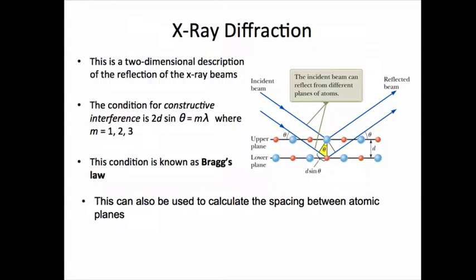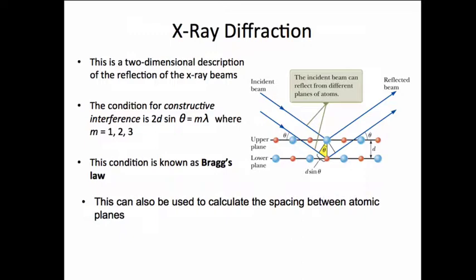To see how it works, consider two parallel incident rays that are monochromatic and are in phase. One ray reflects off the top surface of the crystal. The other ray gets through the top plane but then hits an atom in the plane underneath it and reflects from that.